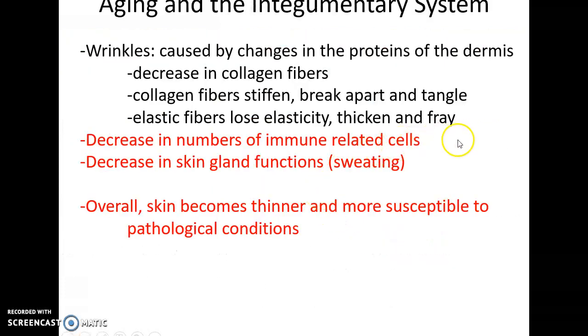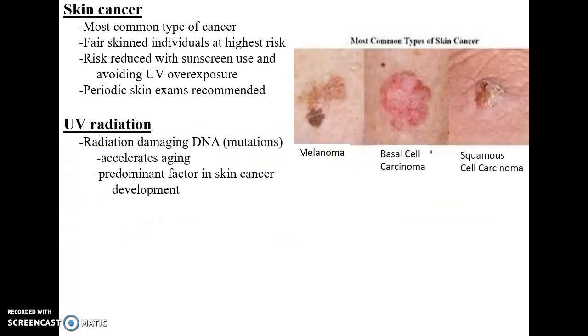Aging and wrinkles are caused by changes in protein production: collagen fibers aren't replaced as often and become stiff, break apart, and form tangles; elastic fibers become less elastic; immune cell function decreases; and gland function declines. Skin becomes thinner and more susceptible to damage and disease. Skin cancer can be caused by UV radiation, leading to melanoma from melanocytes, basal cell carcinoma from basal cells, and squamous cell carcinoma.